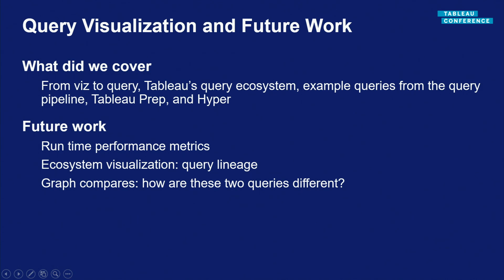If you have ideas, my contact information will be at the end of the talk. One key thing I think would be really powerful is tying the upfront processing to actual performance metrics — what really happened versus what I thought would happen. Getting those performance metrics would be huge. If I could tie all the queries together — the lineage, or what you might call query provenance — I started from a viz and went all the way down through Hyper. The Superstore dashboard alone runs more than 30 queries, so what was fast or slow? I really have no idea.